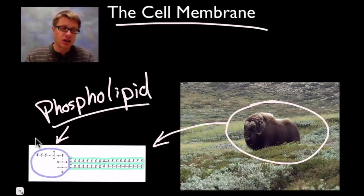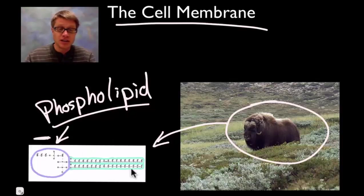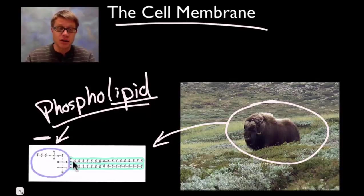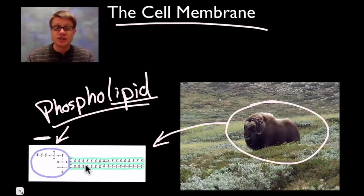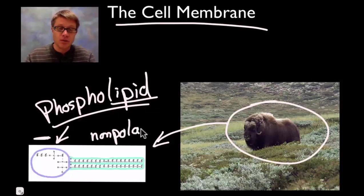Up here it's going to have a charged part — a negative charge. And then the tail end, the lipid part, or the fat part, since it has so much carbon with hydrogen around the outside, it's nonpolar. This whole rear end is going to be nonpolar.